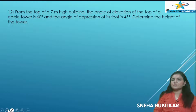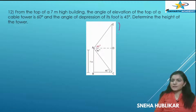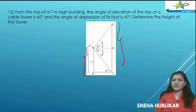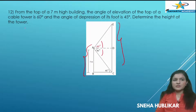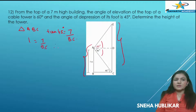Question 12: From the top of a 7-meter high building, the angle of elevation of the top of a cable tower is 60 degrees and the angle of depression of its foot is 45 degrees. Determine the height of the tower. In triangle ABC, tan 45° equals 7 by BC. Tan 45 is 1, so BC equals 7 meters.